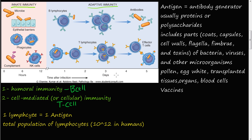Any time after that — days, weeks, months, years — the adaptive immunity is fighting infections along with the innate immunity. Looking at a time-after-infection graph, the adaptive immunity takes a while to get going, but once it does, it's a very powerful system. In adaptive immunity we have B-lymphocytes and T-lymphocytes. The B-lymphocyte pathway is called humoral immunity, and the T-lymphocyte pathway is called cell-mediated or cellular immunity.